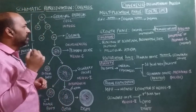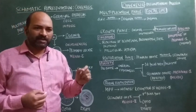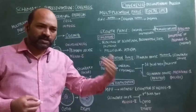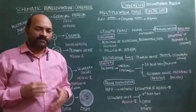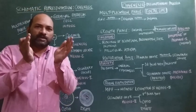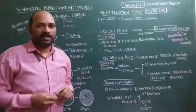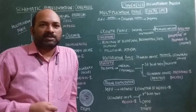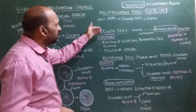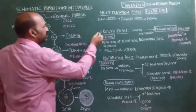Oogonial proliferation occurs until the female child is delivered. Once the girl child is born, there is no further oogonial proliferation — it is restricted only to fetal life and does not continue after birth.